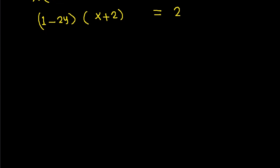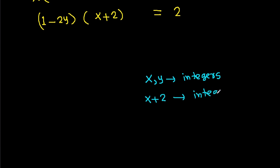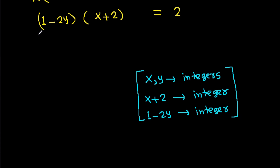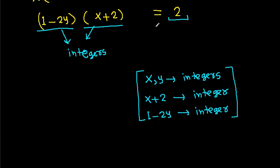So (x plus 2) will be an integer, and (1 minus 2y) will be an integer. Since (1 minus 2y) and (x plus 2) are both integers, and their product equals 2, we need to find all integer factor pairs of 2.